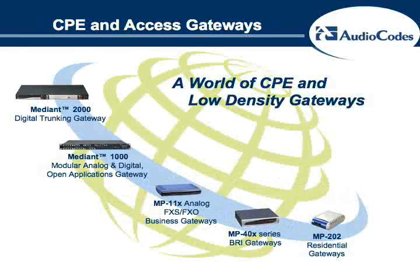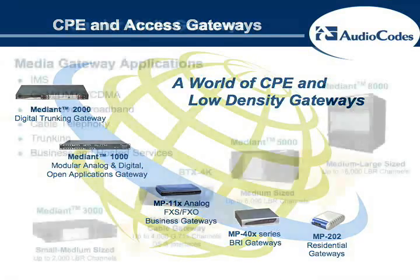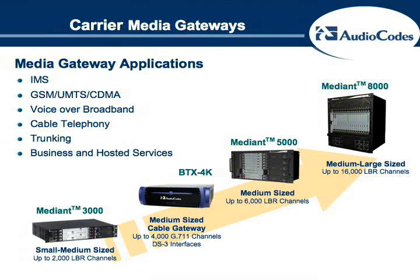The Mediant 1000 is just one member of AudioCodes' award-winning CPE media gateway line that, based on the model, supports from two analog ports all the way up to 480 ports on 16 E1 circuits. Other large carrier-class Mediant products support all the way up to 16,000 ports on multiple OC3 circuits. This scalability is unique in the industry, as the entire line shares common core protocol and DSP technology, improving interoperability and performance.